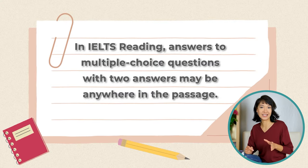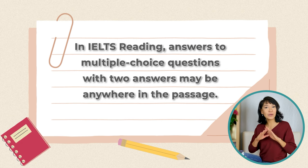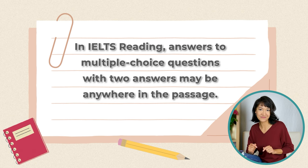Despite being in section two rather than three, I find that these questions may be even harder than those in the last section. In IELTS reading, answers to multiple choice questions with two answers may be anywhere in the passage. These questions are usually in section two — first you may find a set of matching headings or matching sections questions, which require reading the whole passage. Then you get another question type, for example filling the blanks, and finally, at the very end of the section, our questions come. So you're expected to have read everything and the answers may be anywhere.